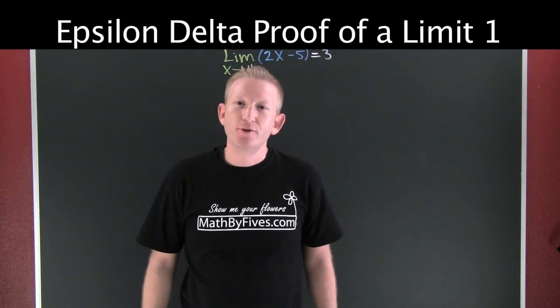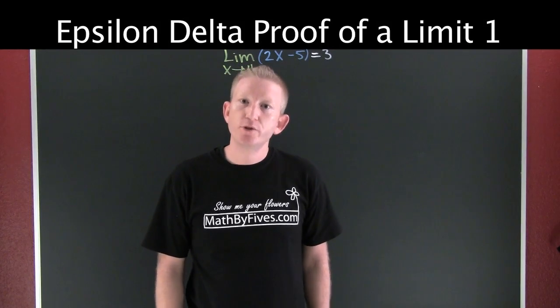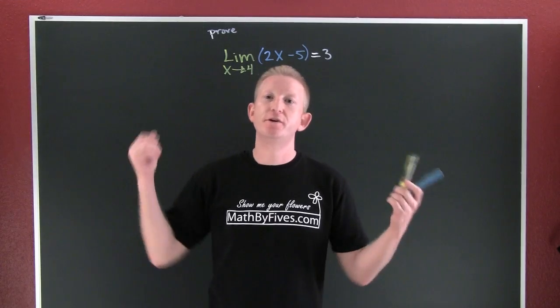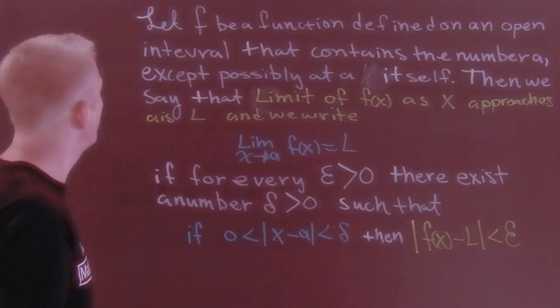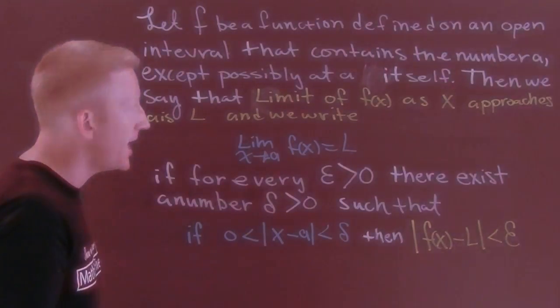So here we go people, what are we trying to do? Prove - oh my gosh, you love that word - we're trying to prove this limit with an epsilon-delta proof. But first we need a definition. Let f be a function defined on an open interval that contains the number a, except possibly at a itself.